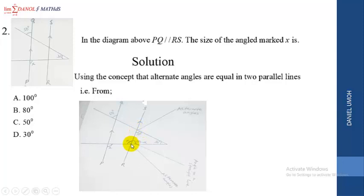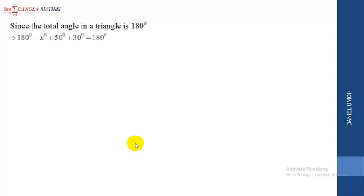To find angle x, we now have a triangle. According to the law of geometry, the sum of angles in a triangle adds up to 180 degrees. So we add the angles and equate to 180 degrees. This implies: 180 degrees minus x, plus 50 degrees, plus 30 degrees equals 180 degrees. Collecting like terms: 180 plus 50 plus 30 gives 260 degrees, minus x equals 180 degrees. Making x the subject: 260 minus 180 equals x.